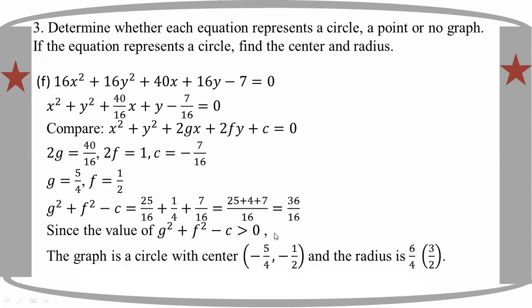The graph is a circle with center at minus 5 by 4, minus 1 by 2. It is 6 by 4. The radius — they call it the radius — get the square root. I see it.